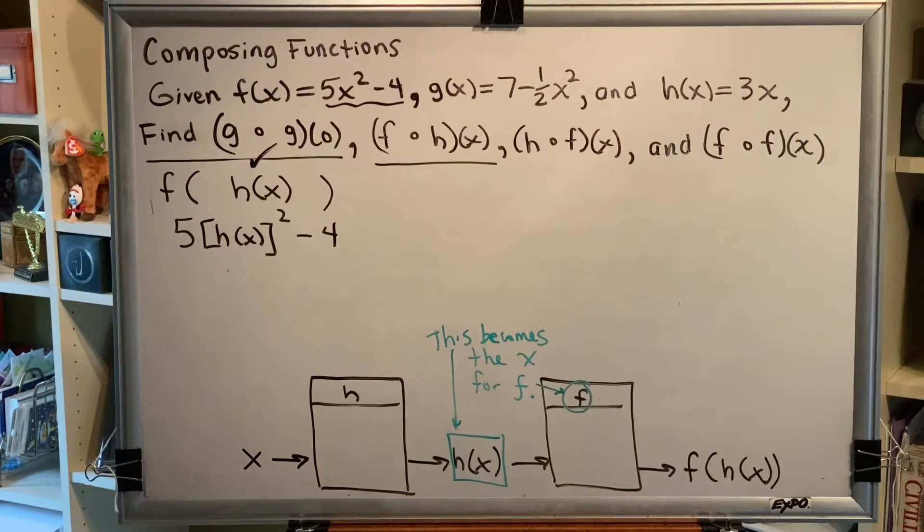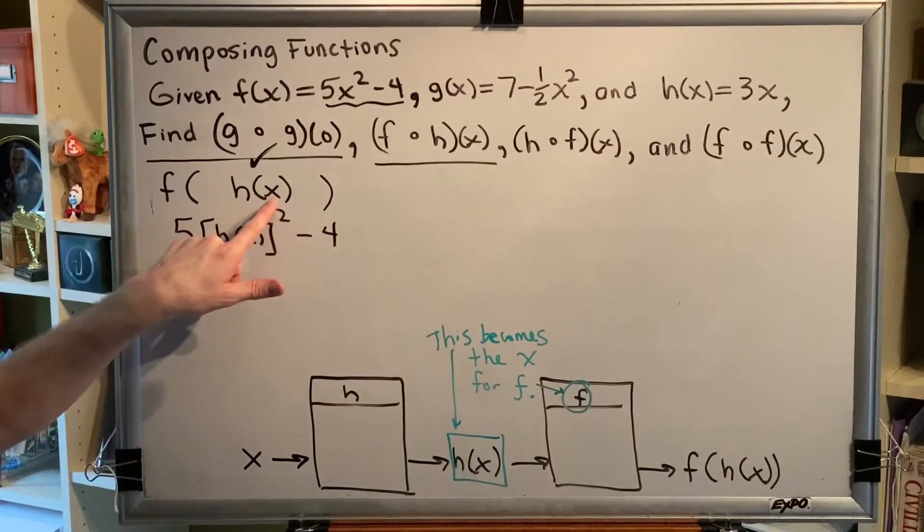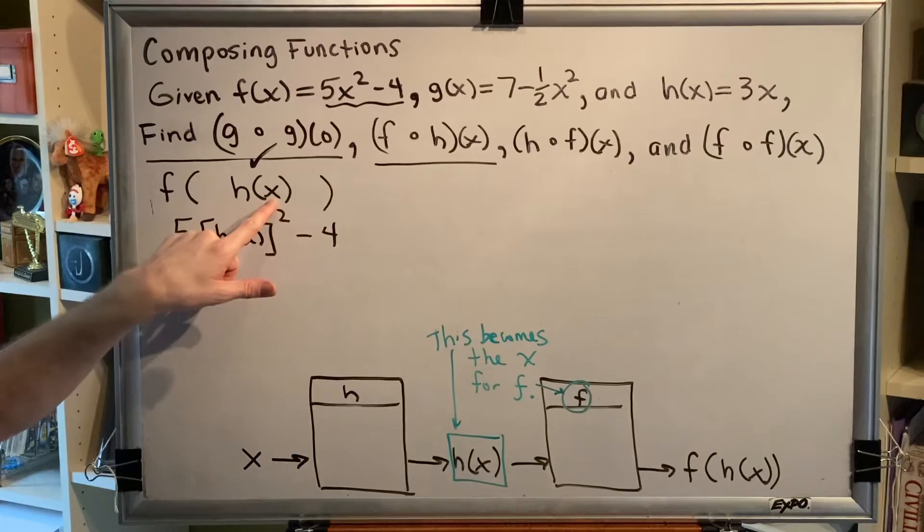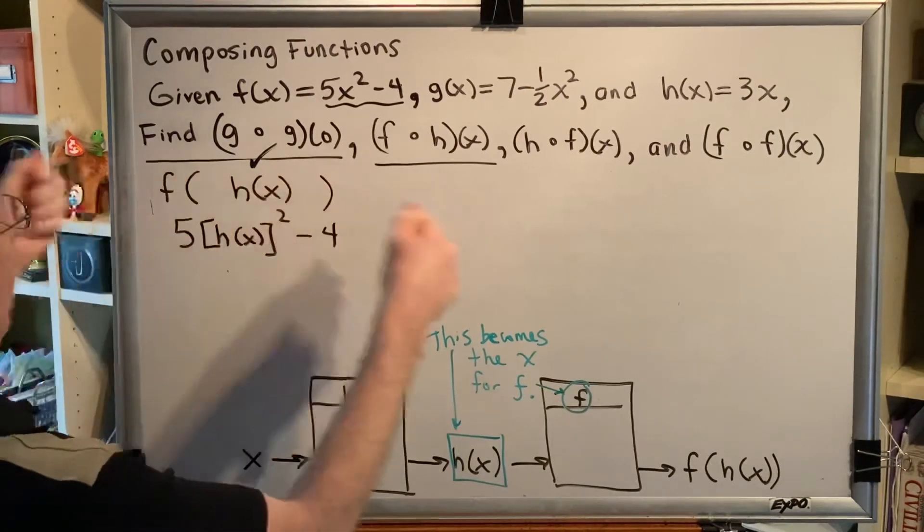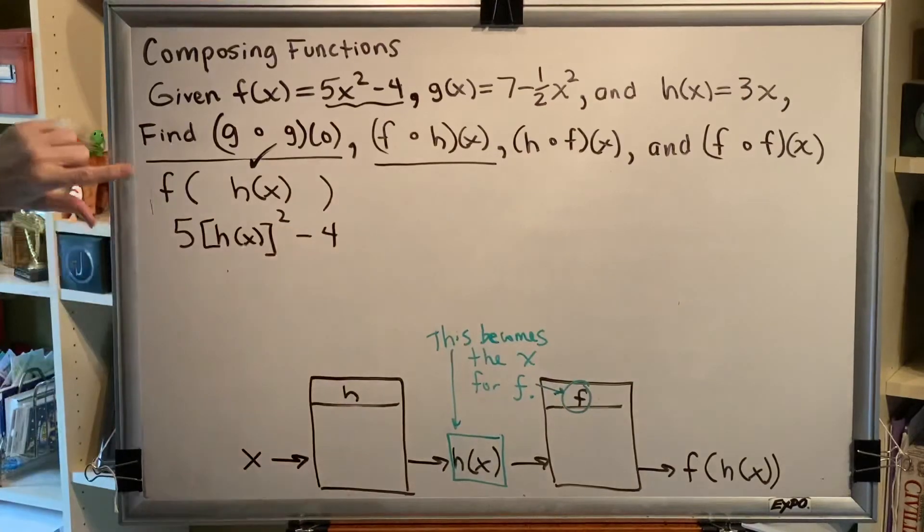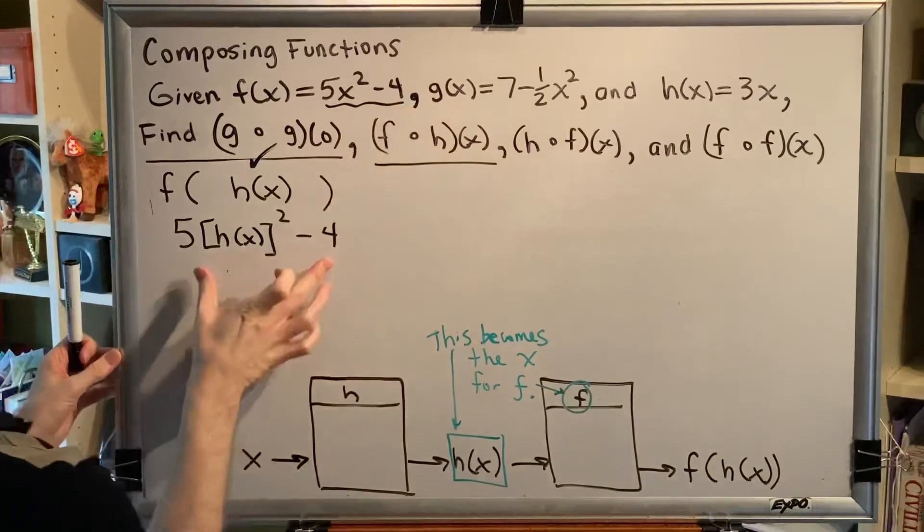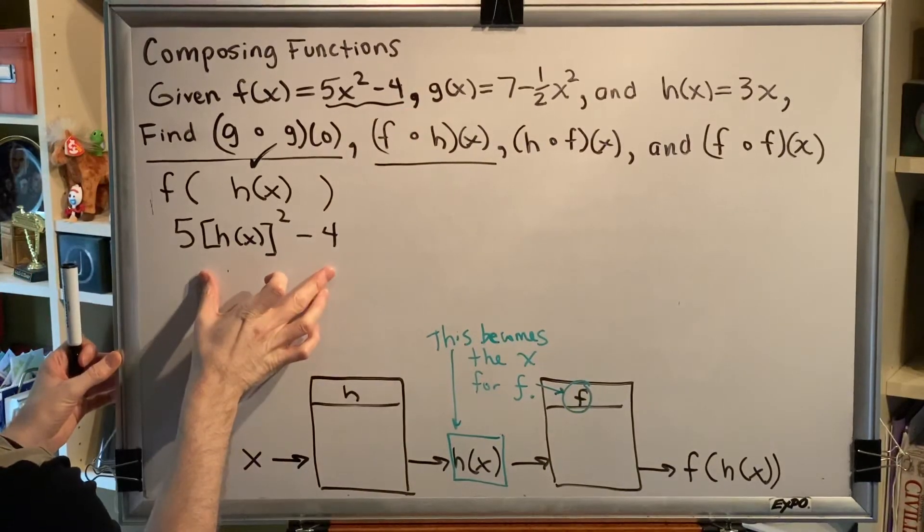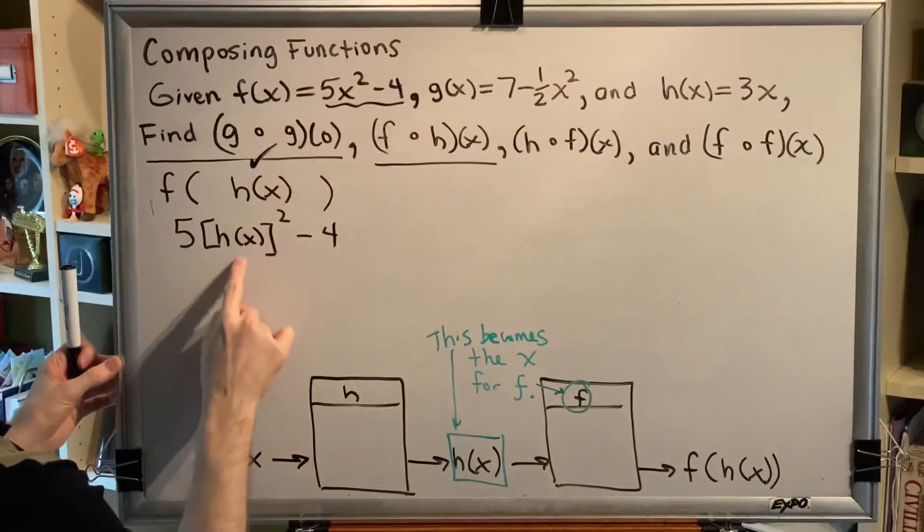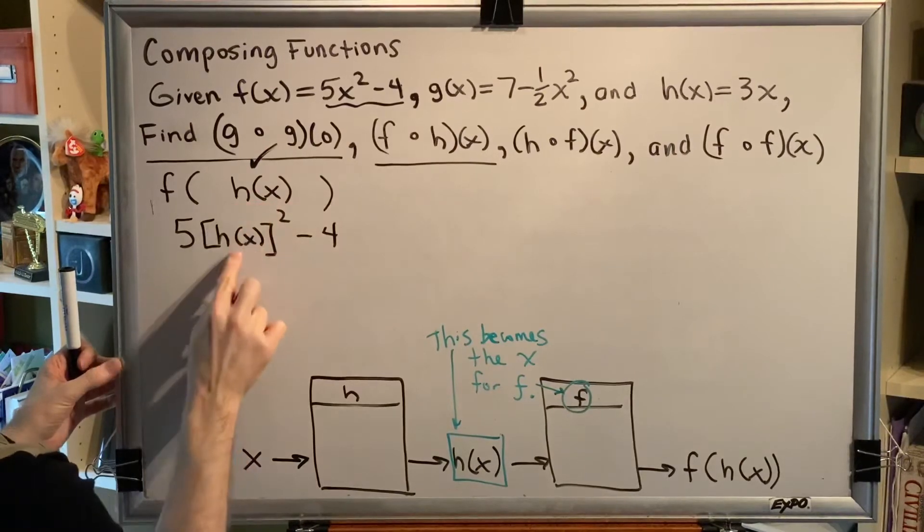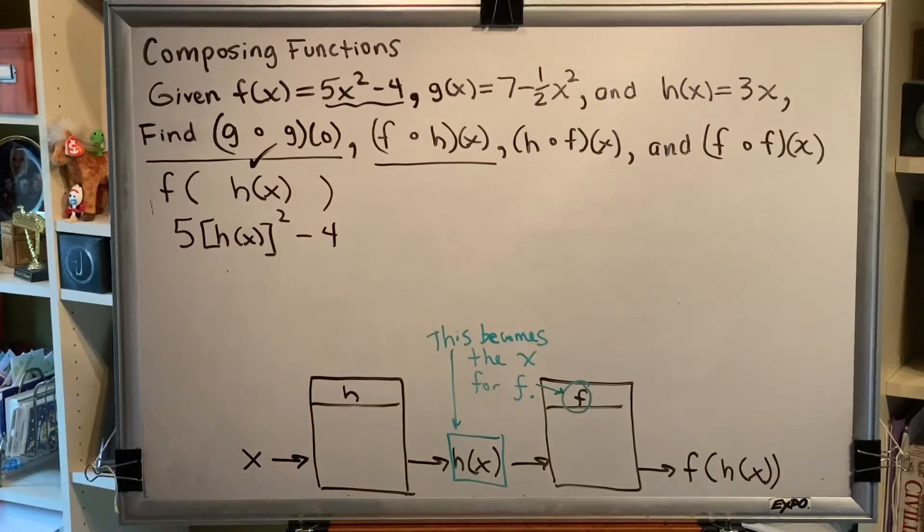Okay, this bears repeating. It's a very important part of understanding how to compose two functions together. So when your innermost item is a variable, instead of working from the inside out, you work from the outside in, which means you look at f first and specifically the right hand side. So we're going to write 5x squared minus 4. But instead of x, we're going to put h of x.